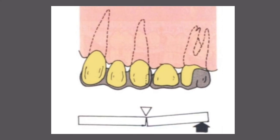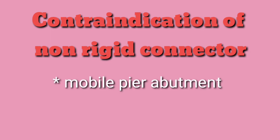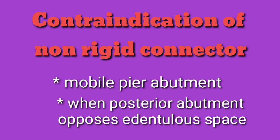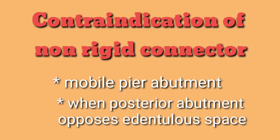This is the principle behind the stress breaker. Now, if the pier abutment is mobile, then you should not use a non-rigid connector. In such cases, a rigid connector must be used. And also, a non-rigid connector is contraindicated when a posterior abutment opposes an edentulous space.